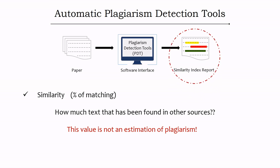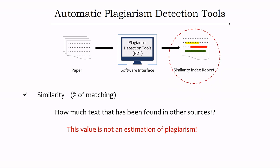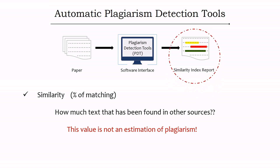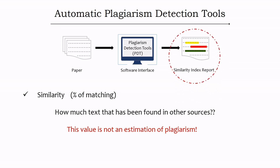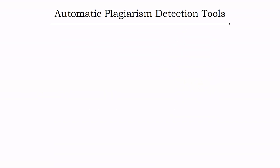Most people think plagiarism detection tools check plagiarism, but in reality they check similarity. We interpret the percentage of similarity as plagiarized content. The report is not an estimation of plagiarism — rather it is a value of similarity.